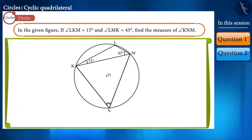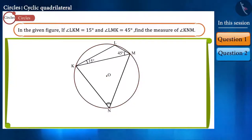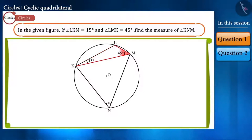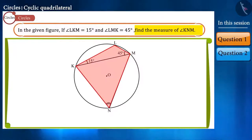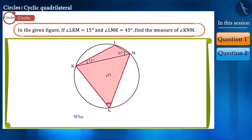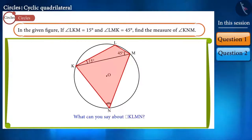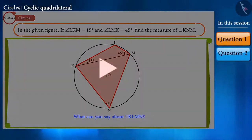In the given figure, it is given that the center of the circle is O. Angle LKM is equal to 15 degrees and angle LMK is equal to 45 degrees. Then, find the value of angle KNM. Friends, what can you say about the quadrilateral KLMN? You can pause the video to think about the answer.